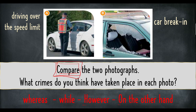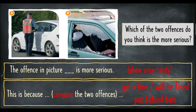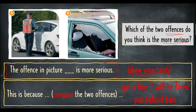The point is: driving over the speed limit for one, car break-in for the other. But when you make your sentence, make it sound like you are not sure — 'I think,' 'it is probably something.' You are not telling what the picture is, but giving your opinion. The next question: which of the two offenses do you think is more serious? I want you to practice showing uncertainty using the phrases given, and also give a reason — 'this is because...'